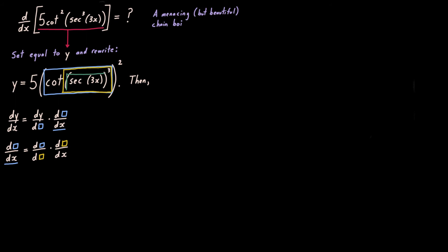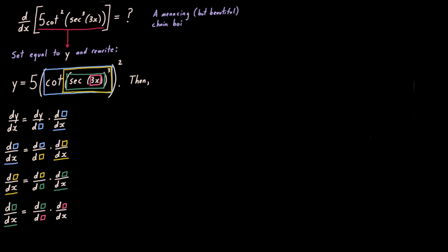Color form of the chain rule again: derivative of blue with respect to x is derivative of blue with respect to yellow, times derivative of yellow with respect to x. And once again, what's inside the yellow? I'm cubing something that is not a simple x — it's a function of x, namely secant of x, which I've boxed in green. So further chain rule is needed: derivative of yellow with respect to x is derivative of yellow with respect to green, times derivative of green with respect to x. But again, inside the green I'm taking secant of some variable quantity that is not a simple x — it's 3x, boxed in pink. So employing the chain rule one more time, then making the appropriate substitutions starting from the bottom and working to the top.